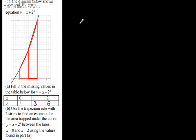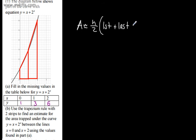We saw that the trapezium rule can be written in a simplified form: the area is approximately equal to h over 2, multiplied by the first value plus the last value, plus two lots of all the other values added together.